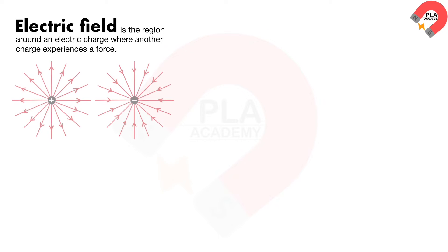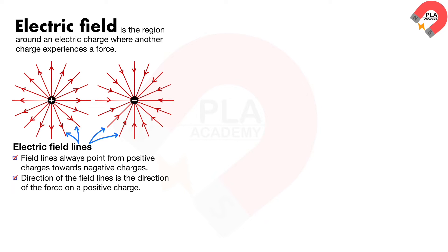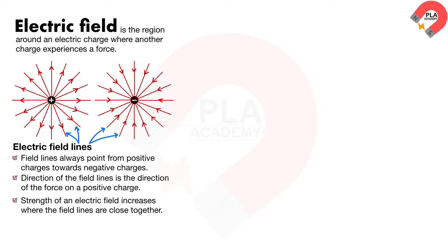Electric fields. An electric field is the region around an electric charge where another charge experiences a force. This can be shown by electric field lines. Field lines always point away from positive charges towards negative charges. The direction of the field lines is the direction of the force on a positive charge. The strength of an electric field increases where the field lines are close together, and decreases where the field lines are far apart. Field lines cannot cross.